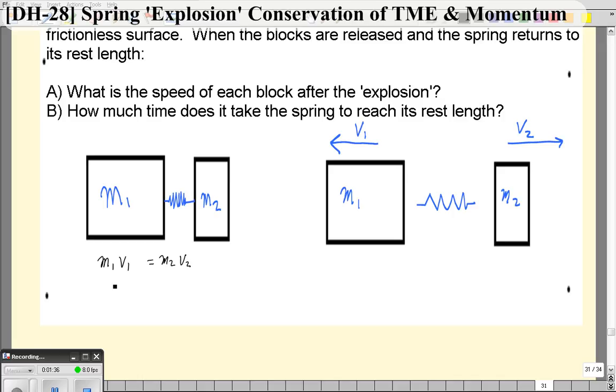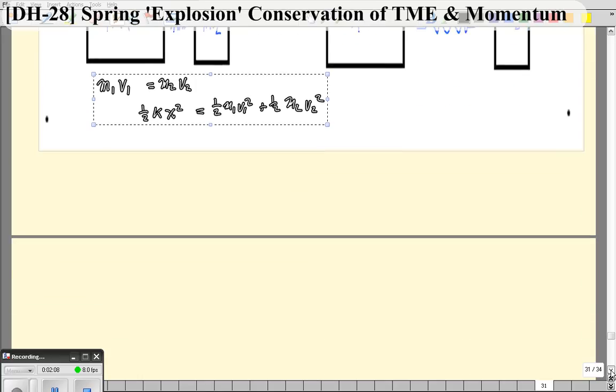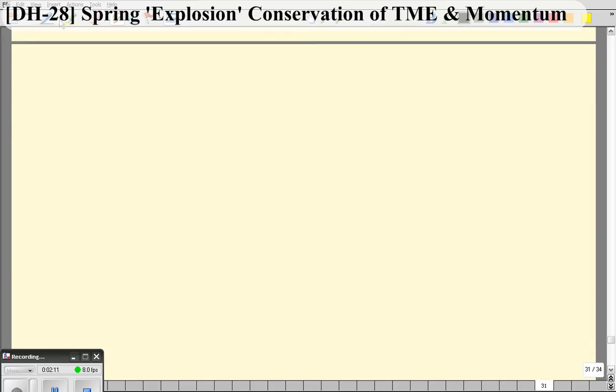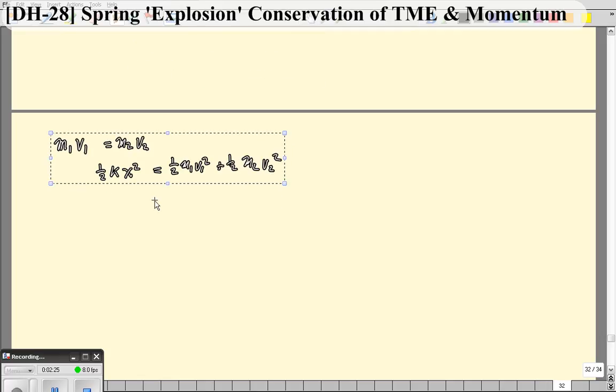It's also going to be true that the kinetic energy before is going to be zero, but the potential energy stored in the spring here, one-half Kx squared, is going to be equal to the kinetic energy of both of these combined. So one-half M1 V1 squared plus one-half M2 V2 squared. So let's put these on the other page where I've got a little more room to write.